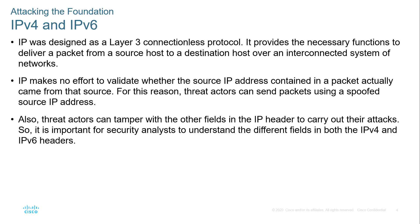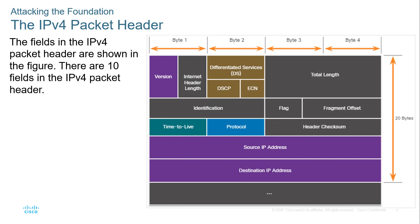It's important for us as analysts to understand the difference between IPv4 and IPv6 fields inside the header. Here's an IPv4 header: we have version, header length, differential services (DS) — whether it's DSCP or ECN — total length, identification, flags, offsets, TTL, protocol, header checksum, and source and destination addresses. Below that will be the data. The protocol field is going to be the protocol we're dealing with in this section.